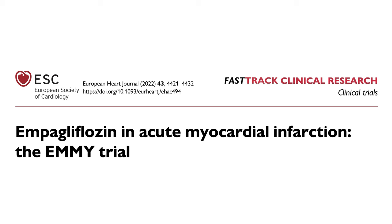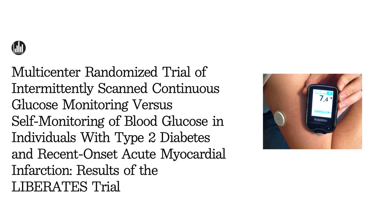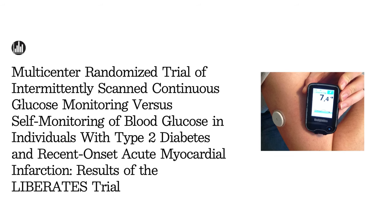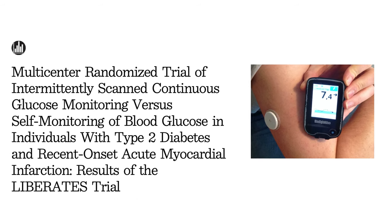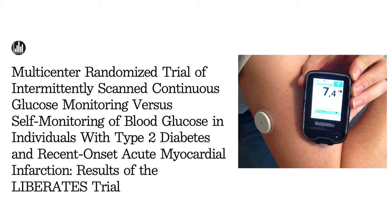Speaking of oral agents, empagliflozin in acute myocardial infarction has been found to reduce pro-BNP levels and improve echocardiographic parameters and blood sugar without causing metabolic acidosis or diabetic ketoacidosis. To prevent hypoglycemia, frequent glucose testing — preferably every hour during the acute ACS phase — is advised. Continuous glucose monitoring has been shown to be more effective than capillary checks after an acute coronary syndrome, both in preventing hypoglycemia and in achieving proper control.